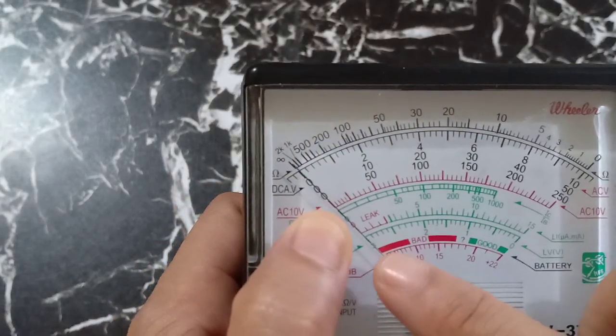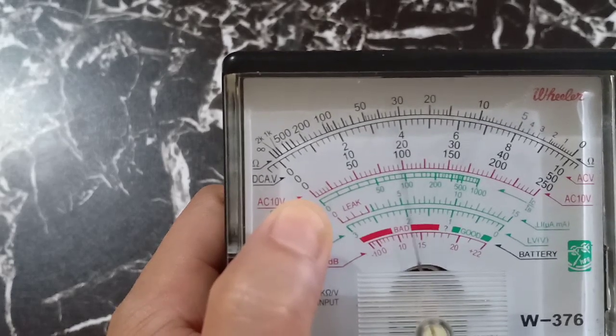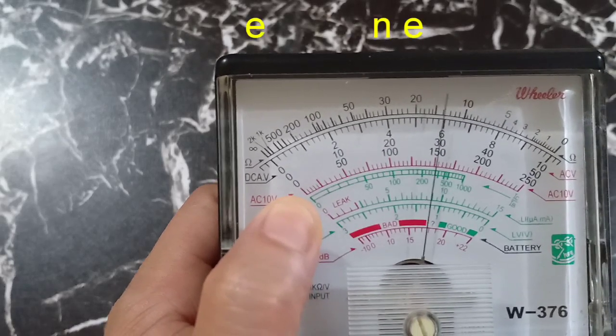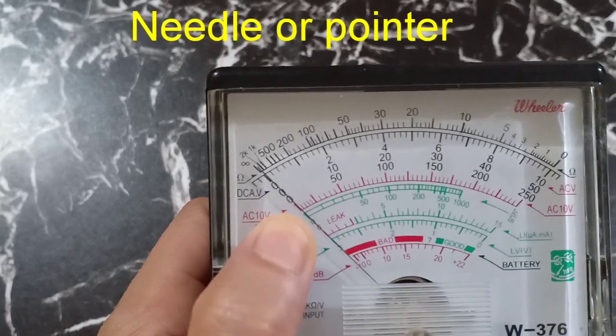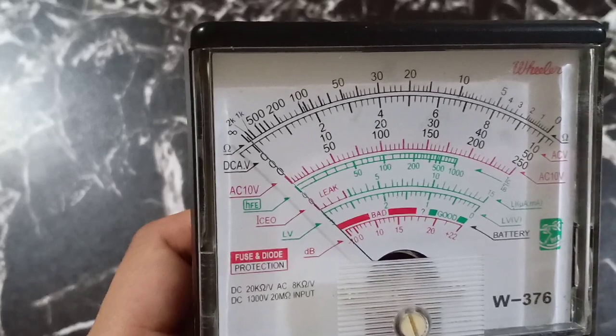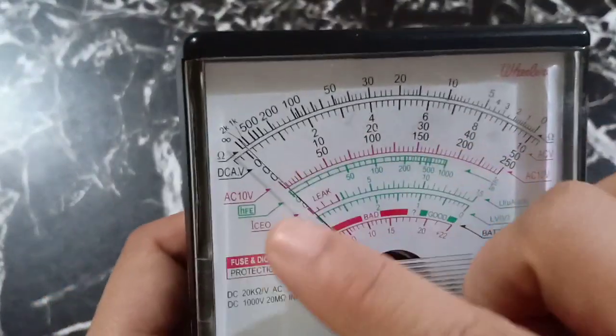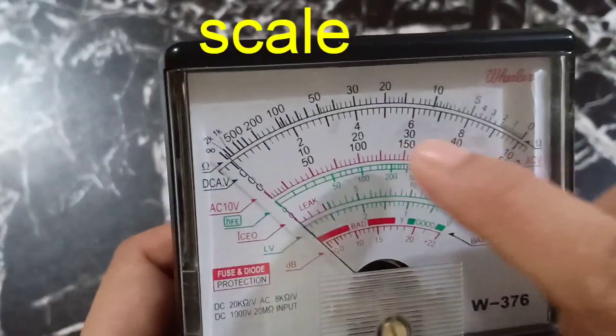Can you see this part? This part of the multi-tester, the one that is moving right now, is called the needle or the pointer. There are a lot of numbers present here. These are called the scale.